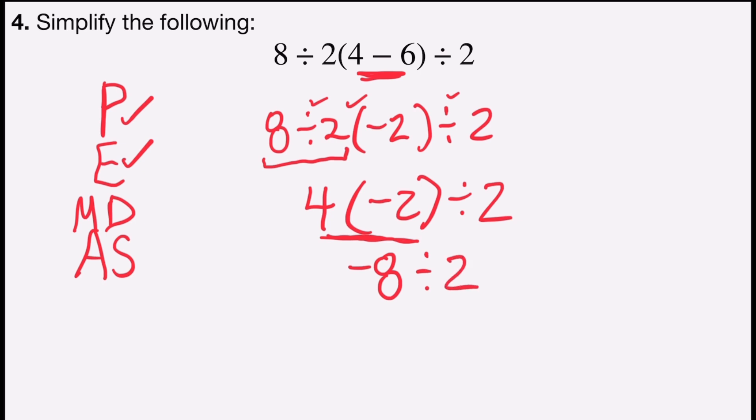And negative 8 divided by 2 as my last step will give me negative 4 as my answer.